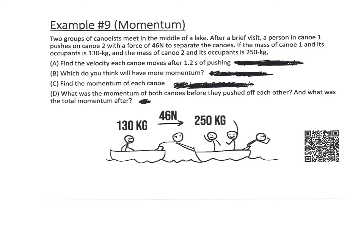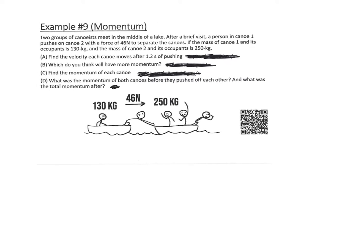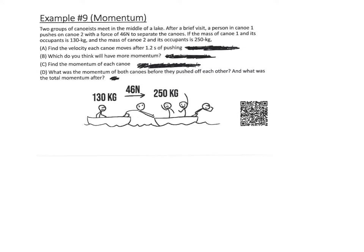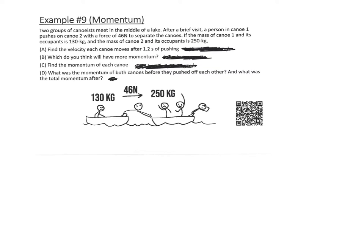Today we're going to pick up with example nine. We've got the two canoeists — you've just heard me talk about that. In part A, find the velocity each canoe moves after 1.2 seconds of pushing. So the velocity of the canoe after 1.2 seconds of moving.